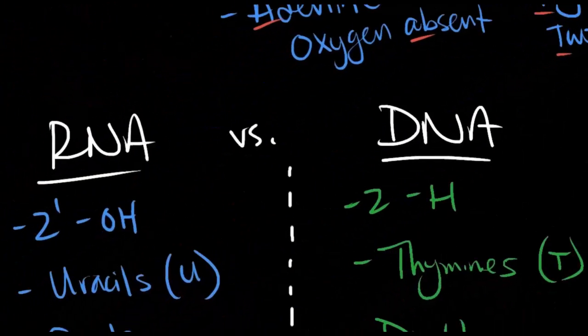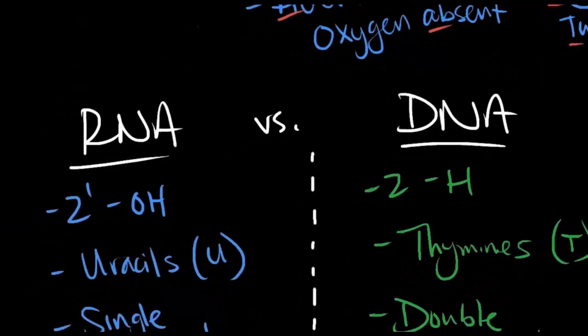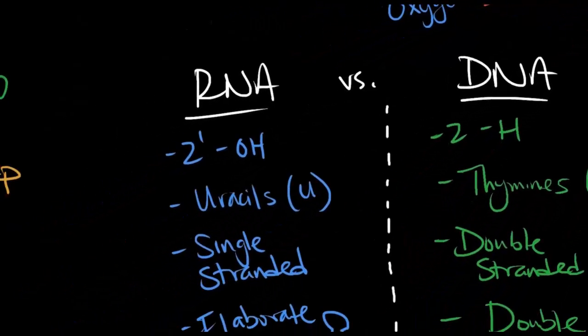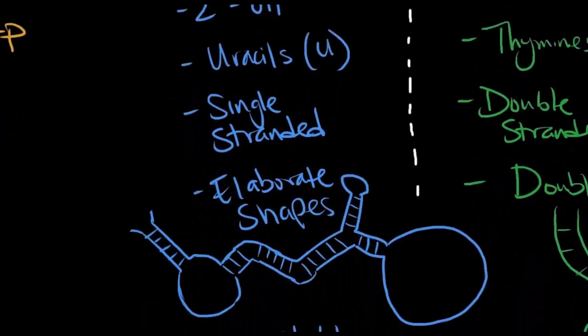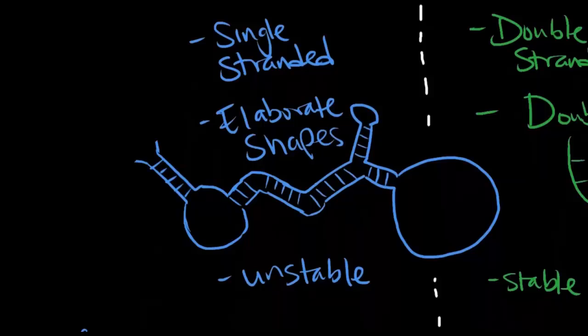Now let's talk about some of the differences in RNA and DNA. Let's start with what makes RNA unique. The 2' carbon of RNA has an OH. RNA has uracils instead of thymines. RNA is single-stranded and will readily base pair if it can. Because it's single-stranded, it can form elaborate shapes that actually look pretty cool. Also, RNA is less stable than DNA.